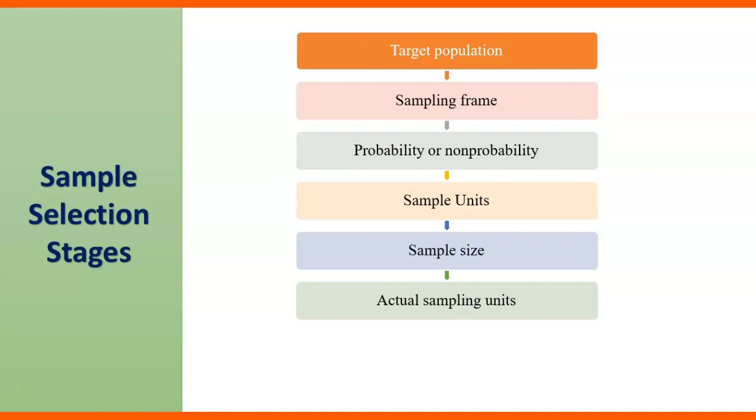The next step is actual sampling units. After doing all the above activities you will reach at this stage that whom should be included in the sampling and which one should be excluded. There are two terminologies: including criteria and exclusion criteria. So you will set both which one needs to be added and which one should be removed.